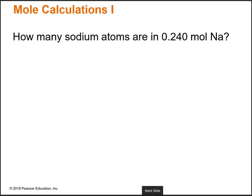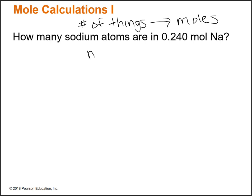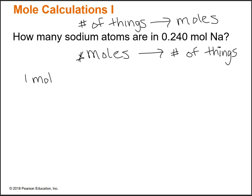How do we use that unit equation? We use it in calculations where we're trying to go from number of things — like atoms — to moles, or moles to number of things. For example: how many sodium atoms are in 0.240 moles of sodium? We're going from moles to number of things. MOL is the abbreviation for mole or moles — don't think molecules, think moles.